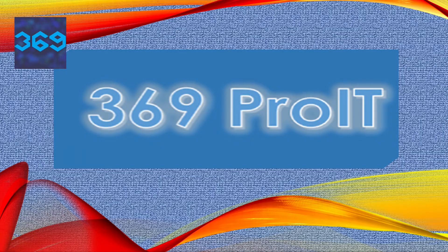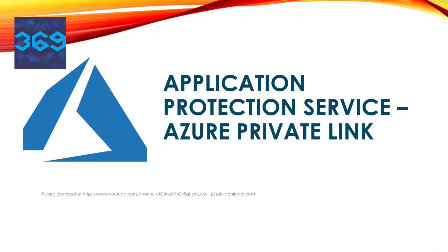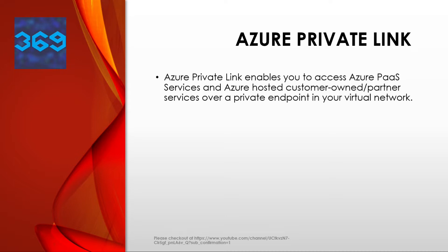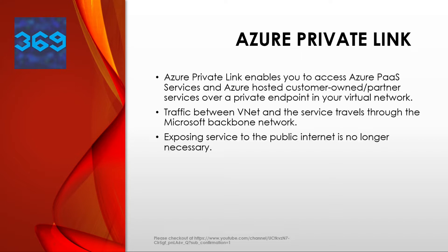Let me start with our discussion on Azure Private Link. Azure Private Link enables you to access Azure PaaS services — for example, Azure Storage or SQL database — and Azure-hosted customer-owned partner services over a private endpoint in your virtual network. The traffic between a virtual network and the service travels through the Microsoft backbone, so exposing the service to the public internet is no longer required. You can create your own private link service in your virtual network and have it delivered to your customer.